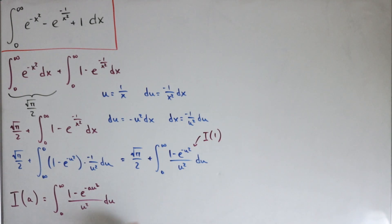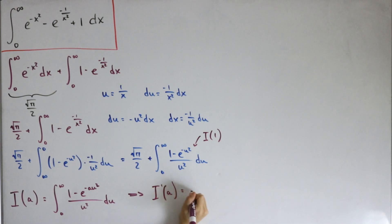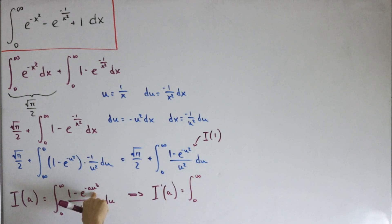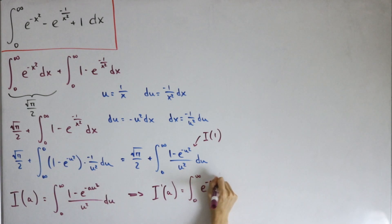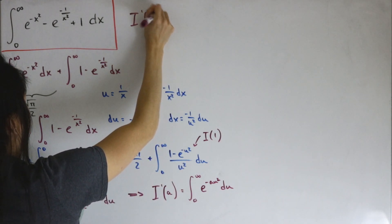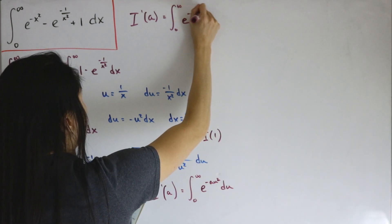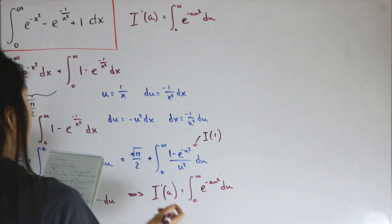We differentiate both sides with respect to a, using the famous trick of differentiating inside the integral — Leibniz's rule. So I prime of a equals the integral from zero to infinity of e to the negative a times u squared, du.